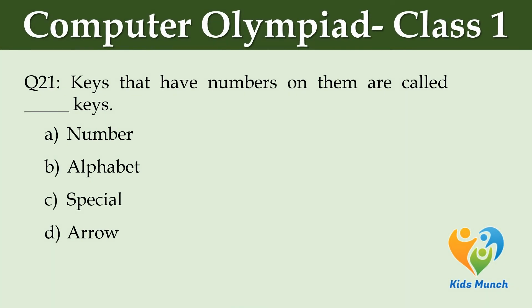Keys that have numbers on them are called dash keys. Option A: Number. Option B: Alphabet. Option C: Special. Option D: Arrow.